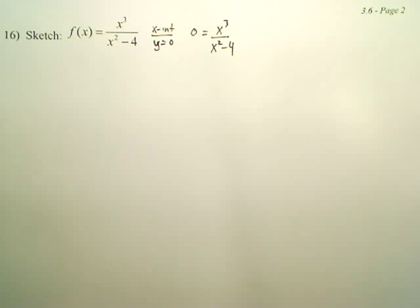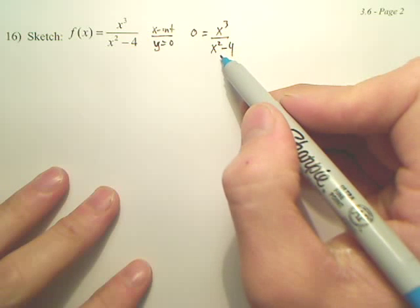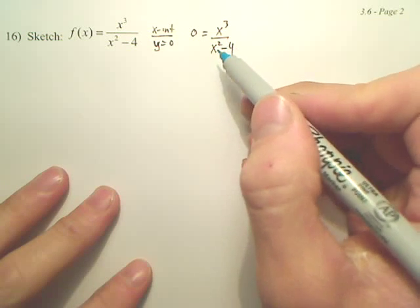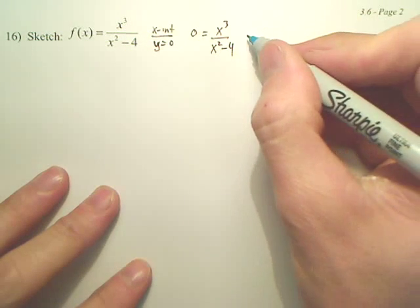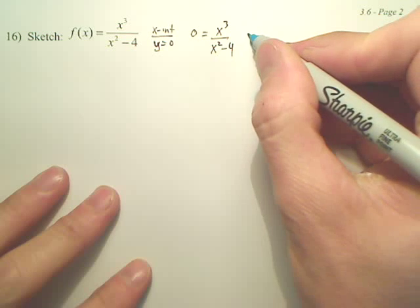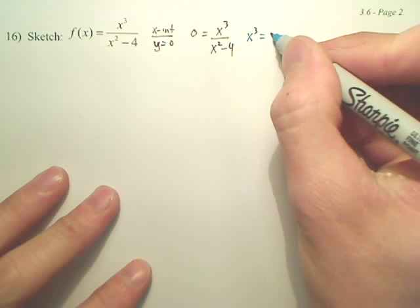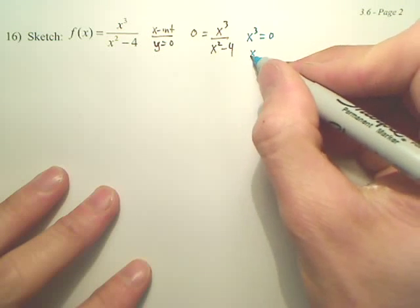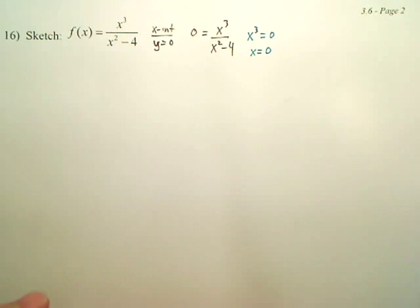When we do that, all we care about is setting the top equal to 0, because the bottom is not a real value. So when you set x cubed equal to 0, you get x equals 0, because you cube root both sides.